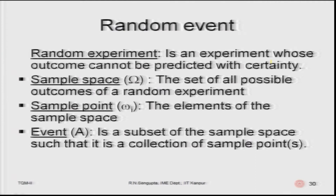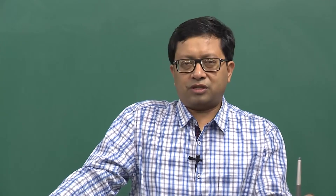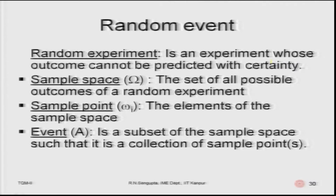A random experiment is an experiment whose outcome cannot be predicted with certainty — for example, rolling a die, tossing a coin, or picking objects from a box. The random variable is what you study, and the realized value is the actual outcome. The sample space is the set of all possible outcomes, and sample points are all the elements of the sample space, which can also be infinite.